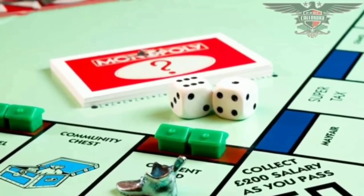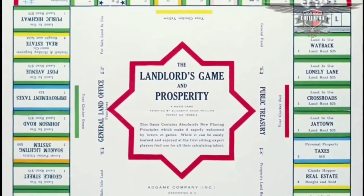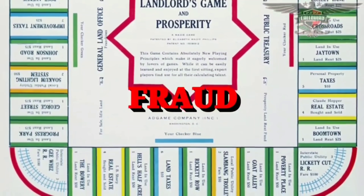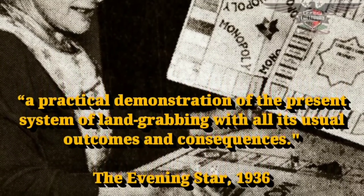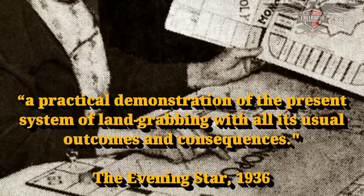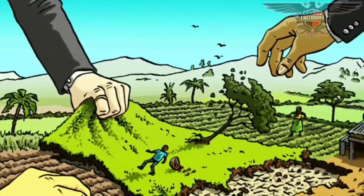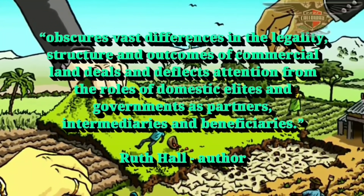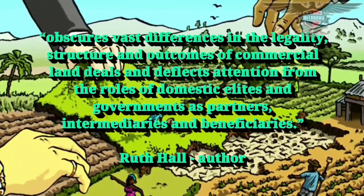Well, that's all due to the fact that this board game was never meant to be a fun family-friendly type of game. In fact, it's a game of reality — a reality of how this society was established from its inception: fraud. In a 1936 magazine article of The Evening Star, Elizabeth Maggie noted that the game was to be, quote, a practical demonstration of the present system of land-grabbing, with all its usual outcomes and consequences, end quote. Author Ruth Hall wrote that the term land-grabbing, quote, obscures vast differences in the legality, structure, and outcomes of commercial land deals, and deflects attention from the roles of domestic elites and governments as partners, intermediaries, and beneficiaries.